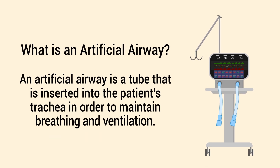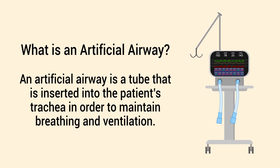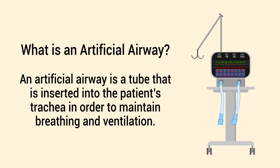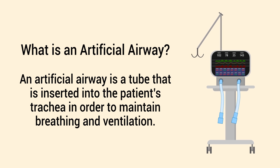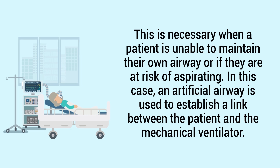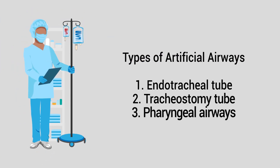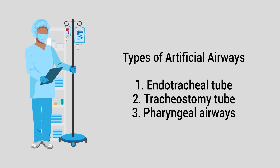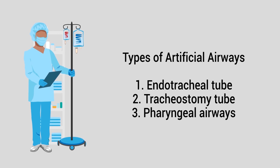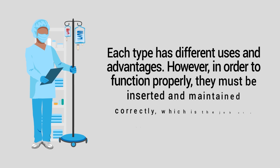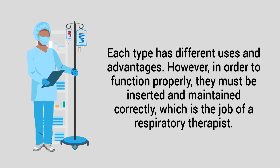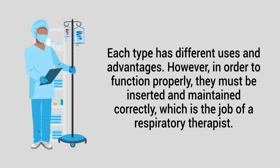An artificial airway is a tube that is inserted into the patient's trachea in order to maintain breathing and ventilation. This is necessary when a patient is unable to maintain their own airway or if they are at risk of aspirating. In this case, an artificial airway is used to establish a link between the patient and the mechanical ventilator. There are three primary types of artificial airways: endotracheal tubes, tracheostomy tubes, and pharyngeal airways. Each type has different uses and advantages, and they must be inserted and maintained correctly, which is the job of the respiratory therapist.